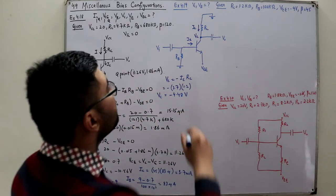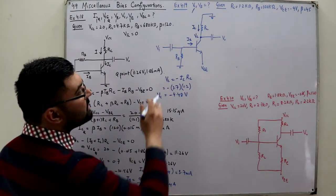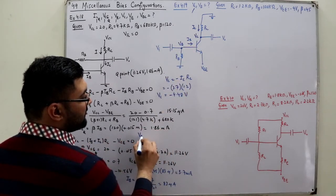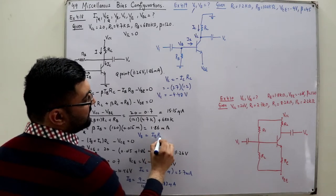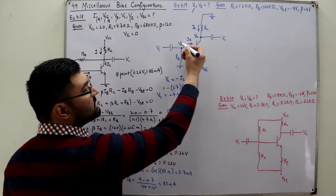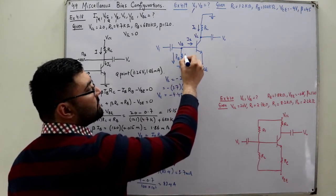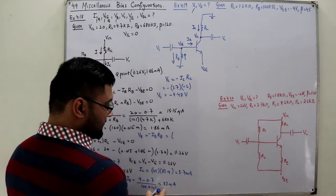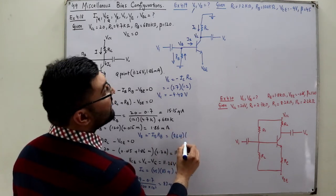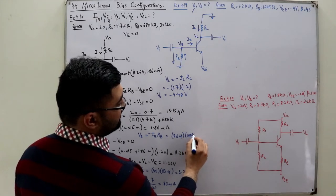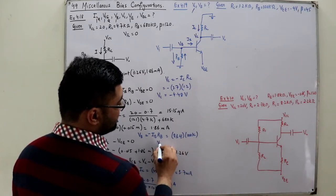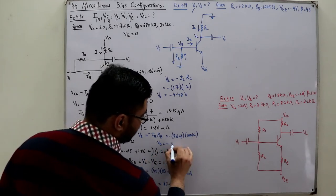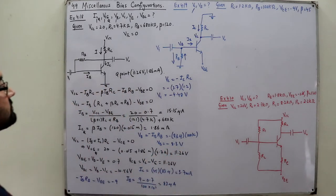Similarly, VB is the potential at the base terminal — it's IB times RB. Again we are moving opposite to the assumed current direction, so we put a negative sign: VB = negative IB × RB = negative 83 µA × 100kΩ = negative 8.3 volts. That completes example number two.